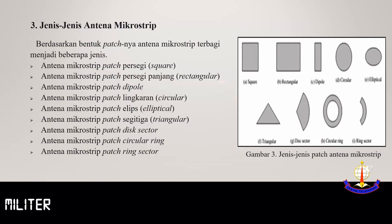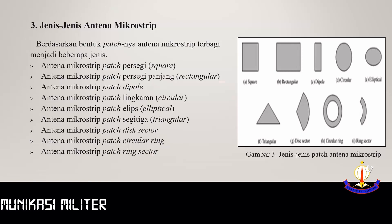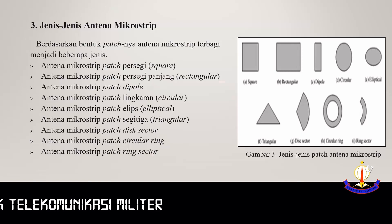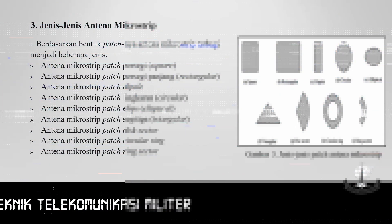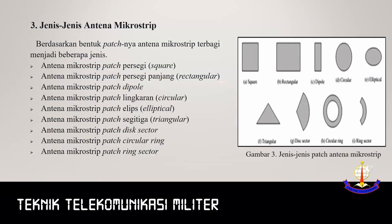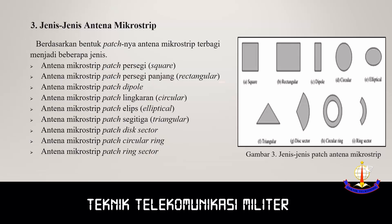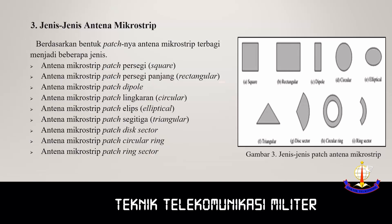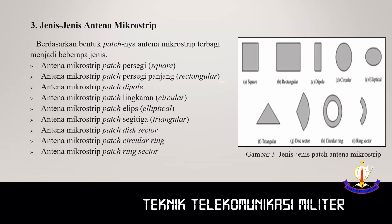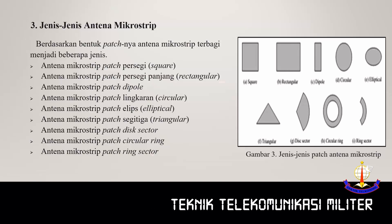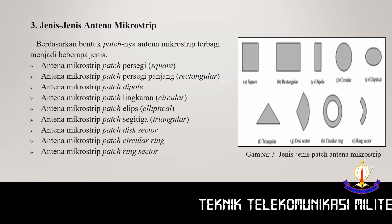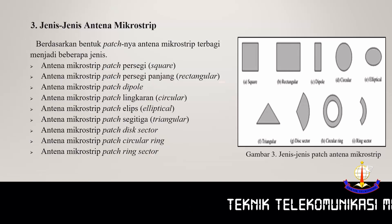Jenis-jenis antena microstrip berdasarkan bentuk patchnya yaitu: antena microstrip patch persegi (square), patch persegi panjang (rectangular), patch dipole, patch lingkaran (circle), patch ellipse (elliptical), patch segitiga (triangular), patch disector, dan patch circular ring. (Types of microstrip antennas by patch shape: square, rectangular, dipole, circle, elliptical, triangular, disector, and circular ring.)